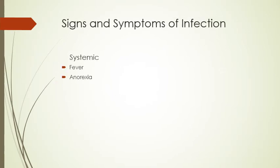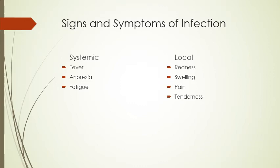Signs and symptoms: systemic infections present with fever, anorexia, and fatigue. Localized infections show redness, swelling, pain, tenderness, drainage, and inflammation. Remember: systemic affects the entire body; localized is one specific area, like a cut on your knee.